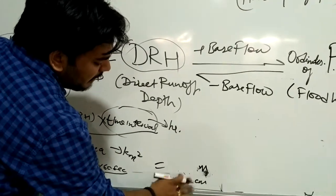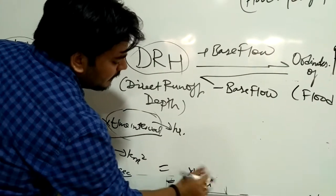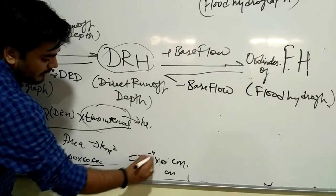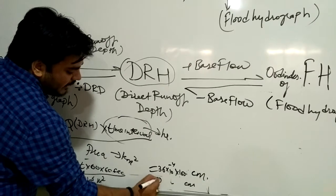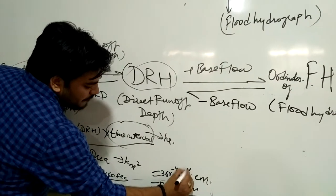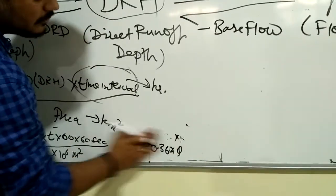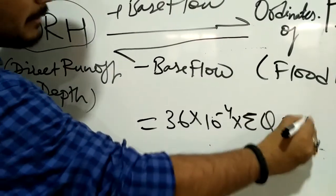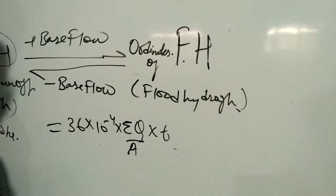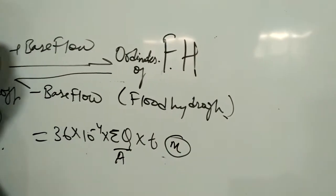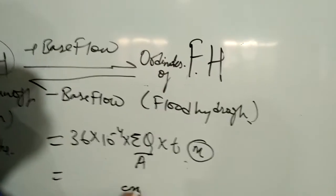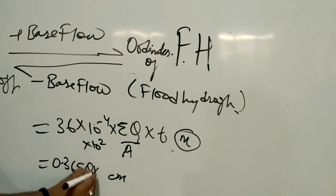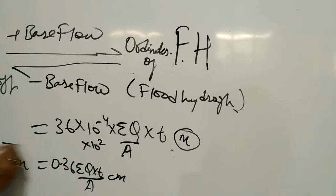To convert the depth from meters into centimeters, we multiply by 100. This gives 36 into 10 to the power minus 4 into summation Q into 100 centimeters, which equals 0.36 into Q. So the final formula is: DRD equals 0.36 times delta Q times the time interval T divided by area A. This formula is used for calculating the direct runoff depth.